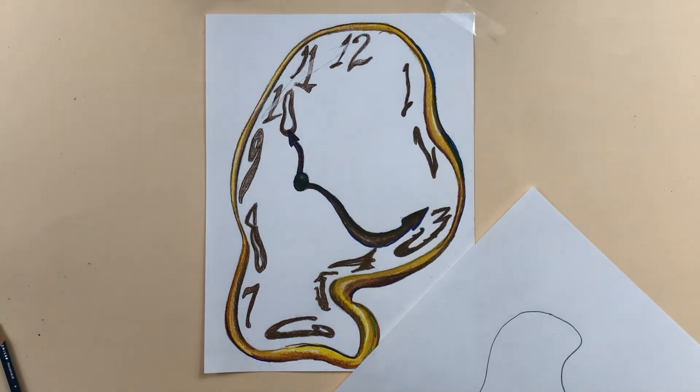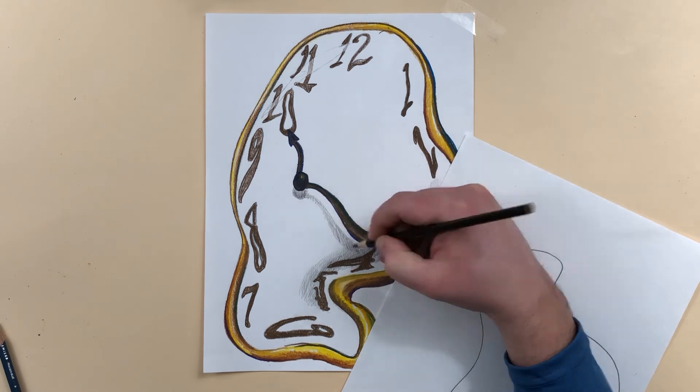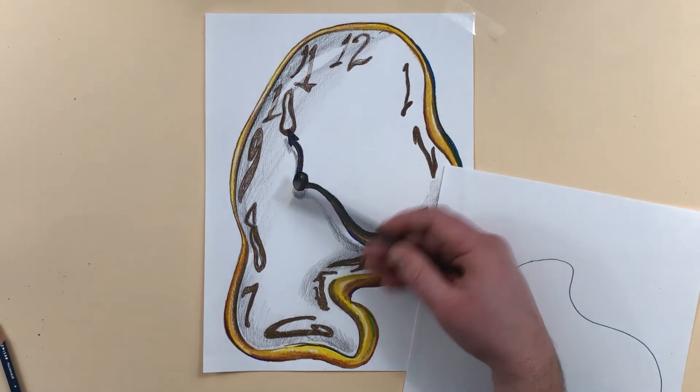Now I'm going to add some shadow to the face of the clock. This is just very lightly done with a dark brown. You could use black if you wanted, you could also use a few other colors.